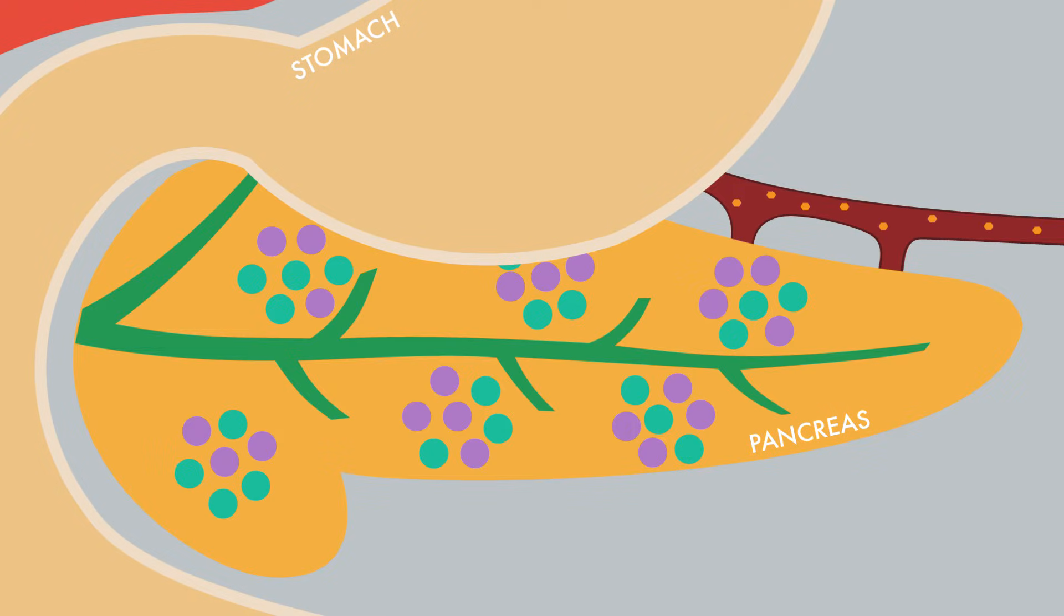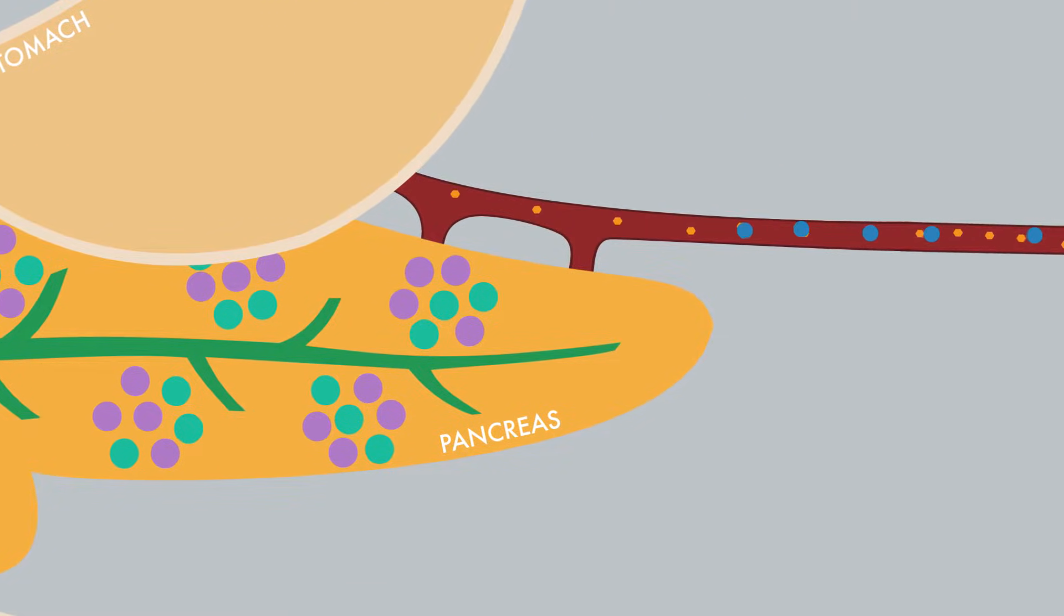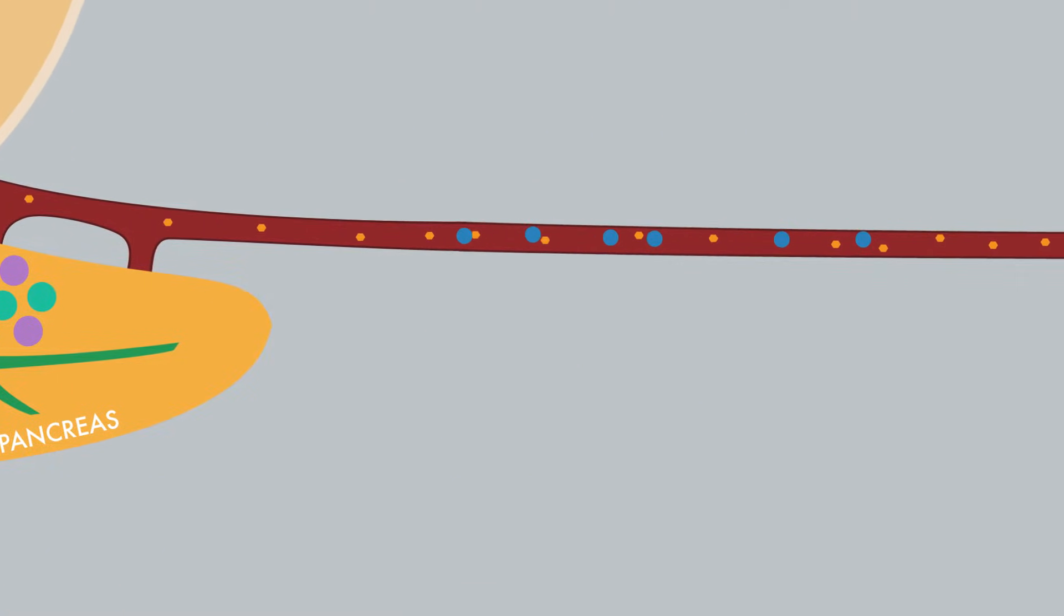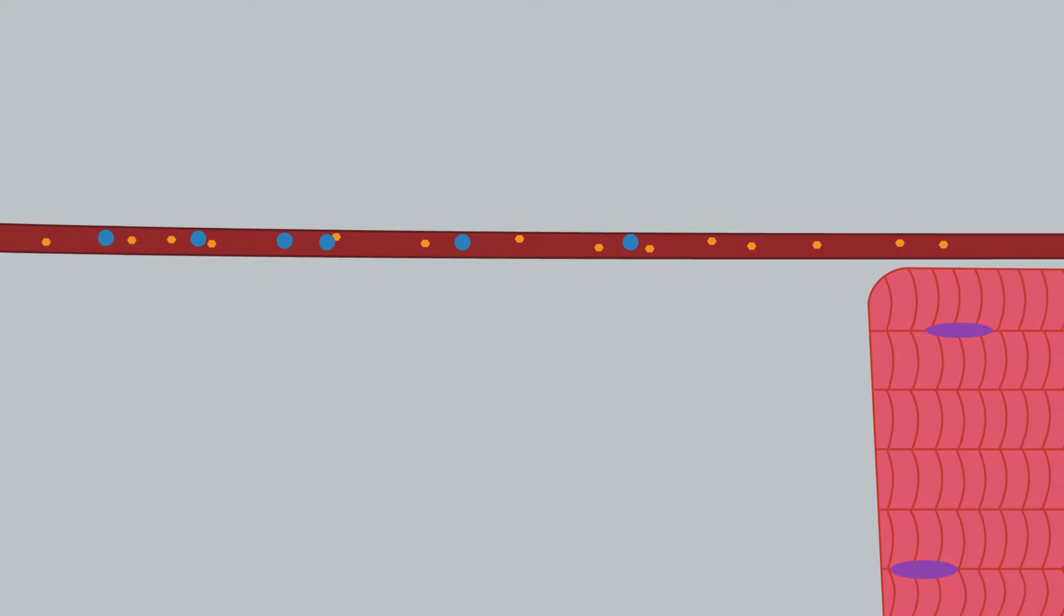The pancreas releases the hormone insulin following ingestion of a meal containing carbohydrates. Insulin regulates the concentration of blood glucose, the product of carbohydrate metabolism.